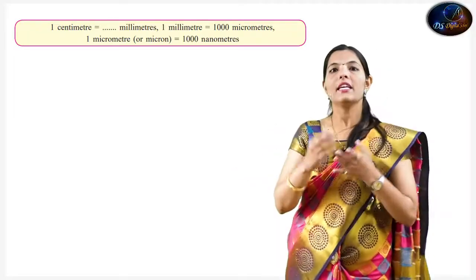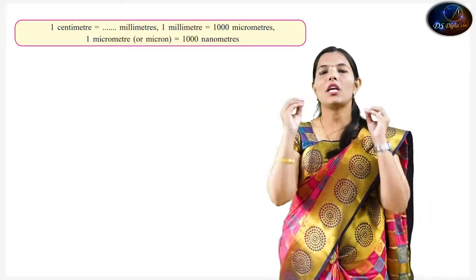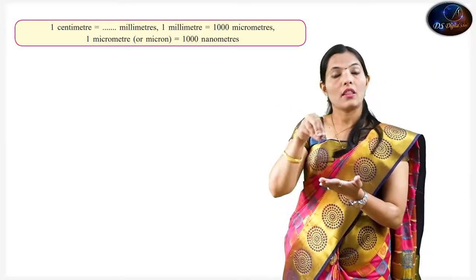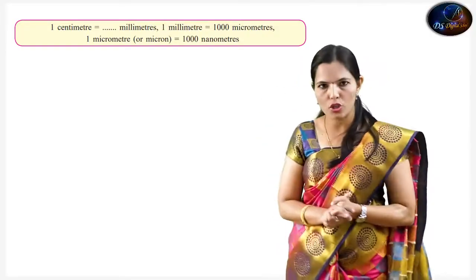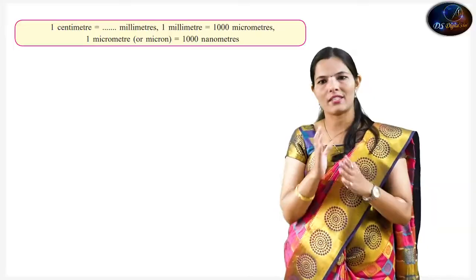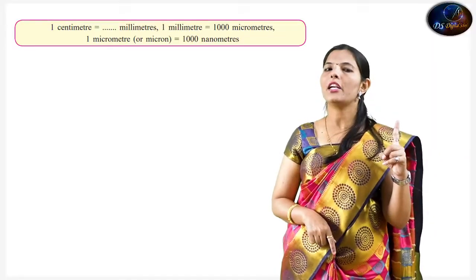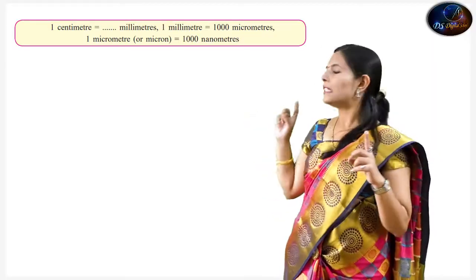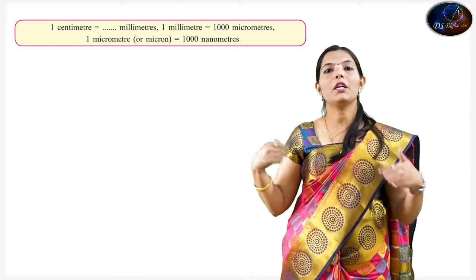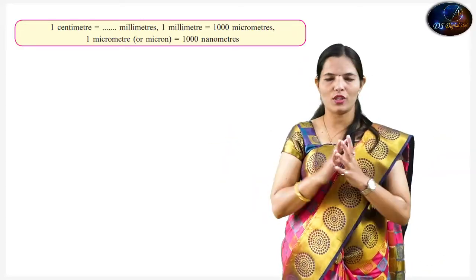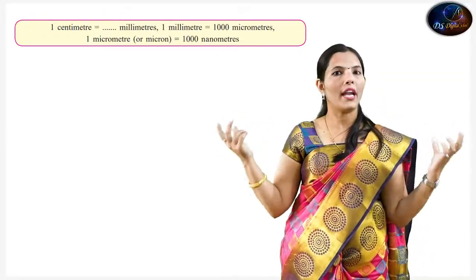We have also given calculations: there are centimeters, millimeters, micrometers, and nanometers. In general: centimeter is the largest, then millimeter, then micrometer, then nanometer is the smallest. The key conversions are: 1 centimeter equals 10 millimeters; 1 millimeter equals 1000 micrometers; and 1 micrometer equals 1000 nanometers. These conversions are very important for the exam.